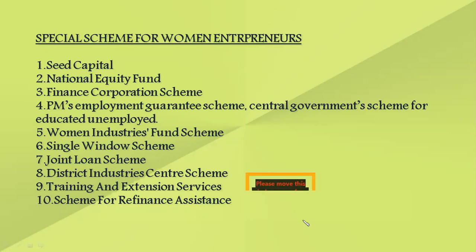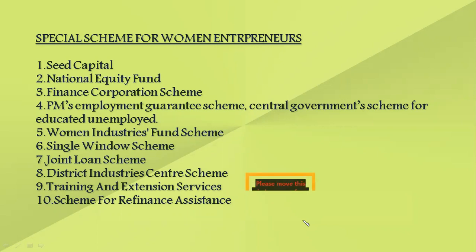After training, they receive an evaluation report and can then enter any business field. The Scheme for Refinance Assistance requires around 12.5% contribution, with varying interest rates, mainly for supporting women through financial help. In many of these cases, women entrepreneurs are not even aware such schemes exist. The main agency responsible for conveying this information is the District Industry Centre (DIC), through which they can learn about various schemes. These schemes are introduced to increase women's participation in the market and contribute to economic development.